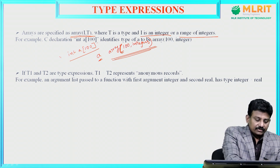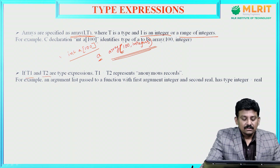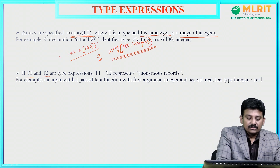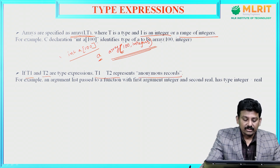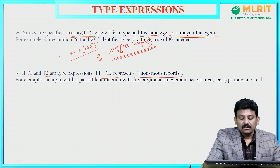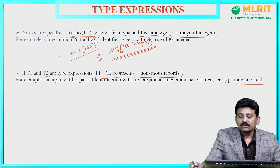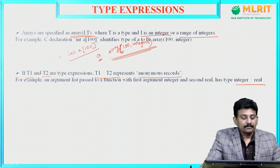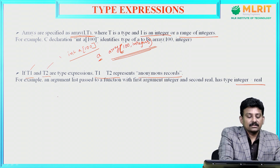Next, if t1 and t2 are type expressions, t1 × t2 represents anonymous records. For example, an argument list passed to a function with the first argument as integer and second as real is represented as type integer × real.